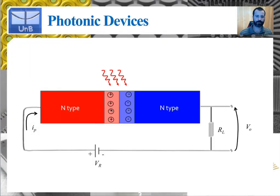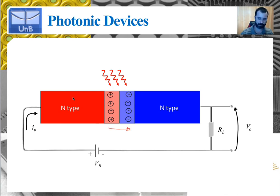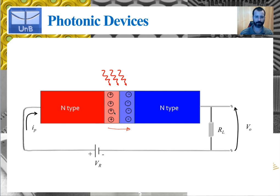The diode is reverse biased, so the depletion layer is larger than it would be in forward bias. The N-type material is at a higher electrostatic potential, and the electric field is directed accordingly. The current that flows through the diode is the saturation current, which is essentially due to the flow of minority carriers — holes in the N-type material and electrons in the P-type material — which diffuse across the junction. This current is pretty negligible.